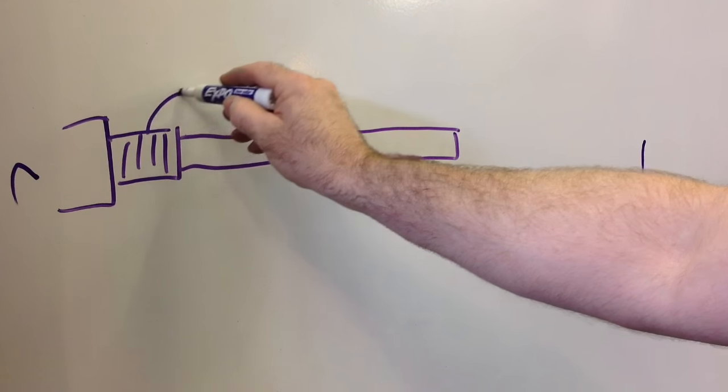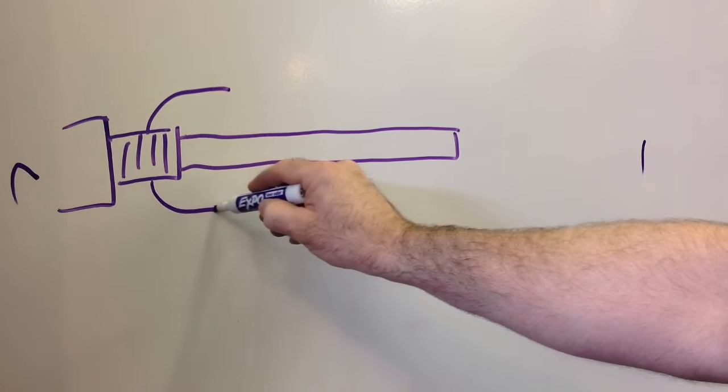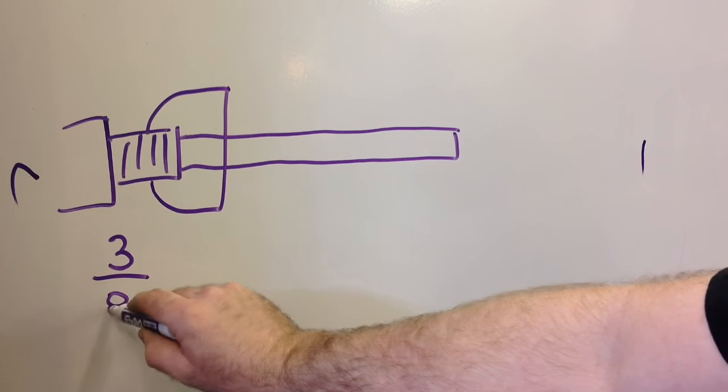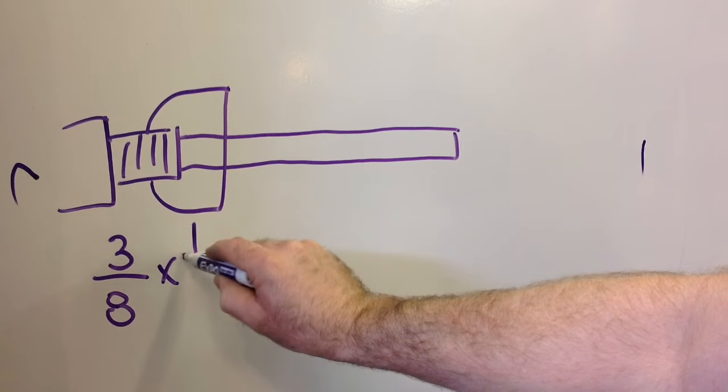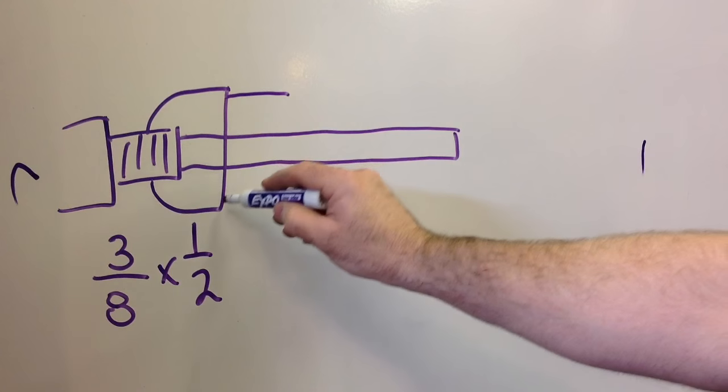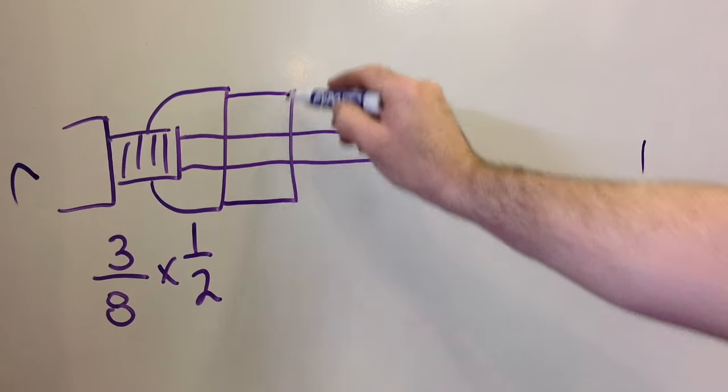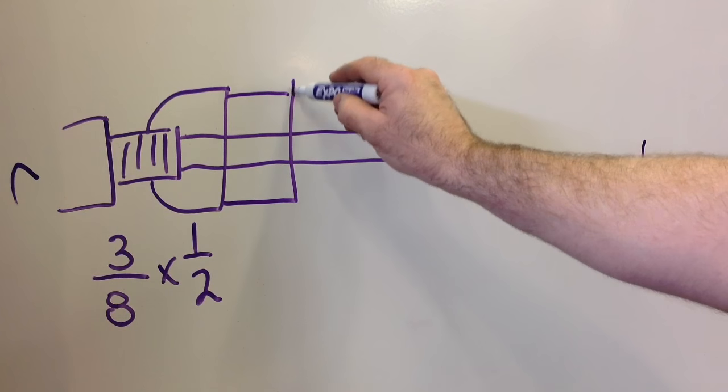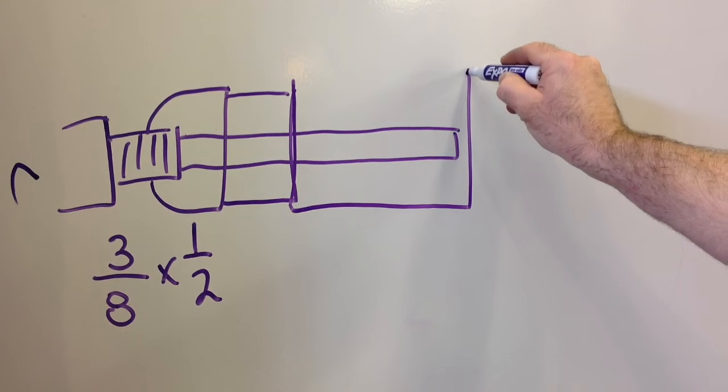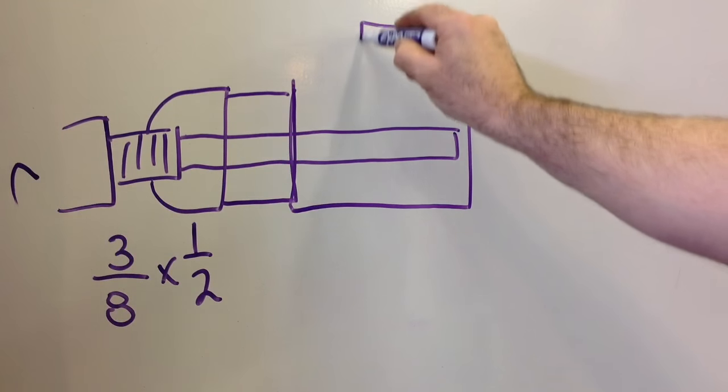We're going to come out of that 3-8 pipe. We're going to attach a 3-8 to half inch reducer. So here we have a 3-8 by a half inch reducer fitting. It's going to go into a short half inch nipple.